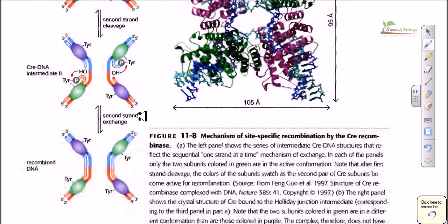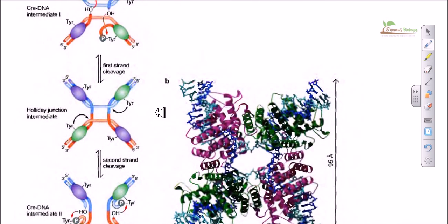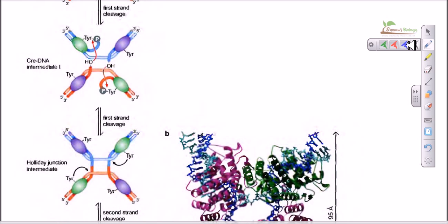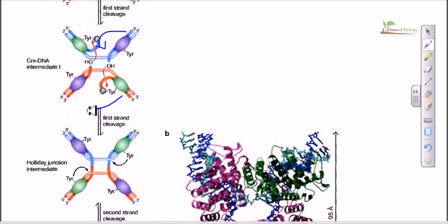After the second ligation, the hydroxyl attacks the phosphate and the strands are joined. Looking closely at the resulting structure, instead of a green-purple / purple-green arrangement, we get purple-green and green-purple. This is simply due to a reorientation — a 180-degree rotation of the molecule. For clarity and understanding purposes, we orient it 180 degrees, and both representations of the final product are correct.